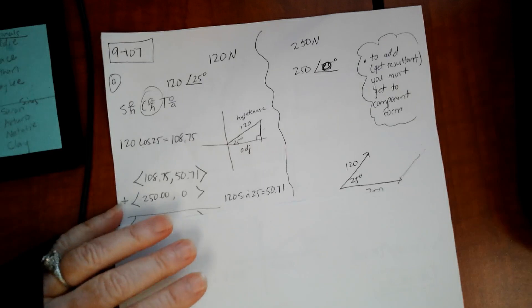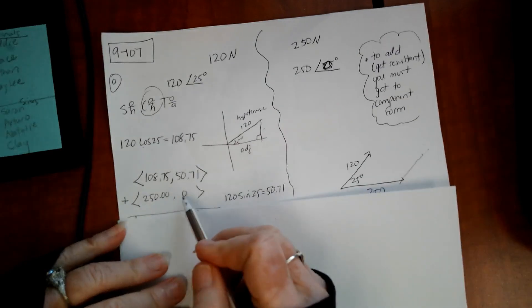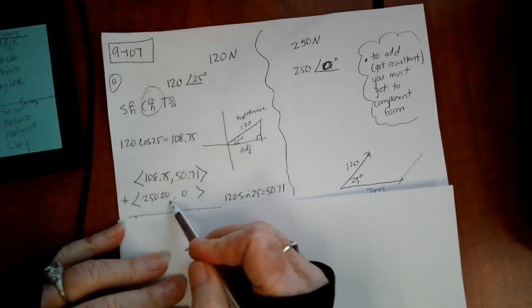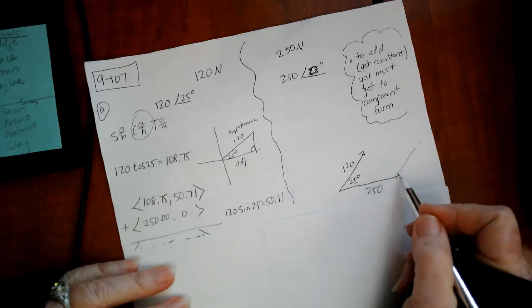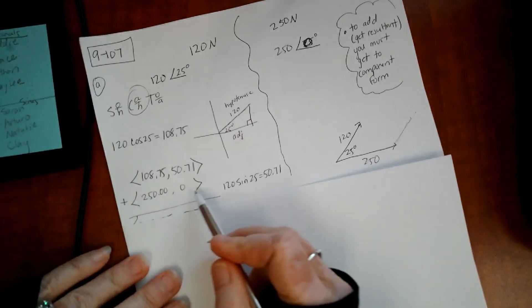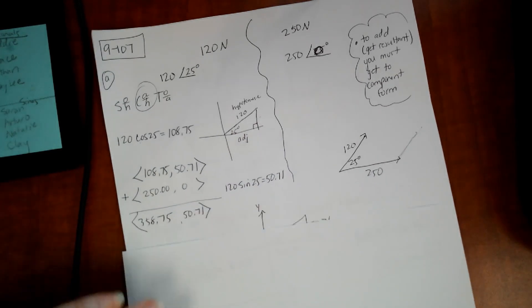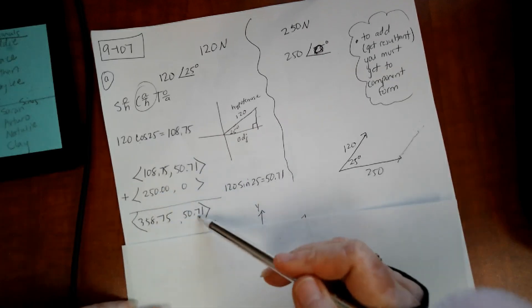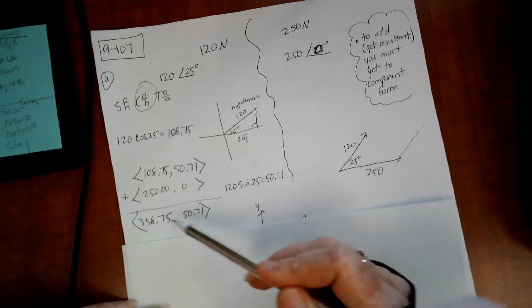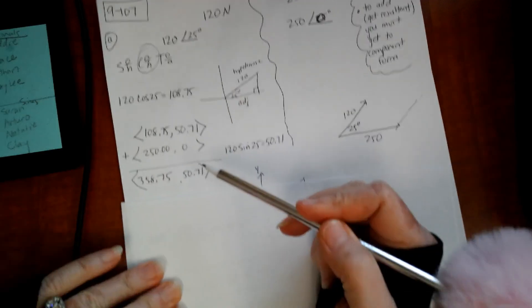I want to add that to this other component. Remember we said it was just going to be 250 comma 0, because it's going 250 to the right and 0 up. When I add them up, I just added them component-wise, and I got this.